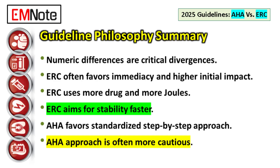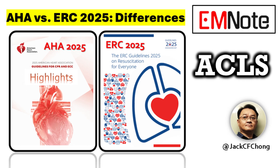Here's something to think about: if the ERC strongly pushes for starting AFib cardioversion at maximal defibrillator output, what does that imply for training and equipment — specifically biphasic versus older monophasic devices? Does this aggressive stance implicitly encourage institutions to phase out lower-powered monophasic machines faster just to meet that high initial joules recommendation? That's worth reflecting on when thinking about your institution's equipment procurement and training standards.